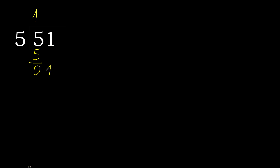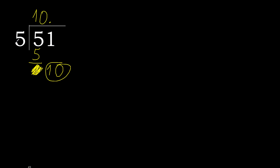Next, bring down. Eliminate the 0 on this side. 1 is less than 5, therefore next. There is no number, so complete with 0 — that gives us a decimal point. Bring down to get 10. 5 multiplied by 2 is 10. 10 minus 10 is 0, therefore finish.